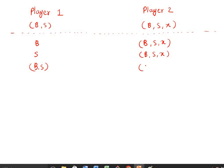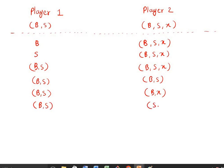Another combination can be player one taking S with player two taking B, S, and X — again player one has a pure strategy and player two has a mixed strategy. We can also have B,S for player one and B,S,X for player two, where both have mixed strategies. Other combinations include: B,S with B,S; B,S with B,X; and B,S with S,X.